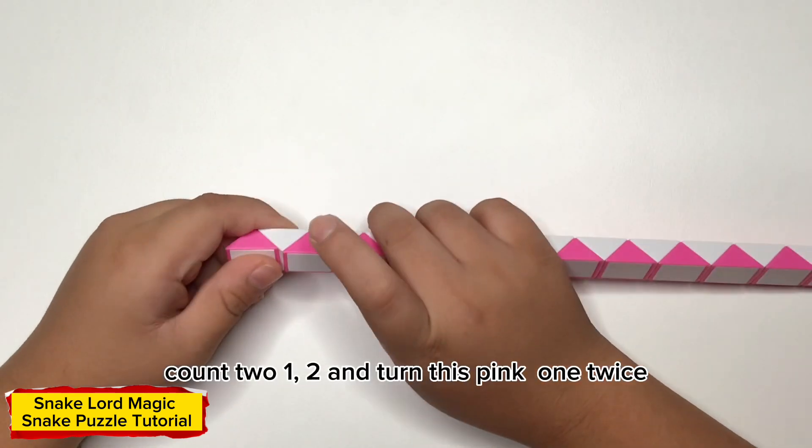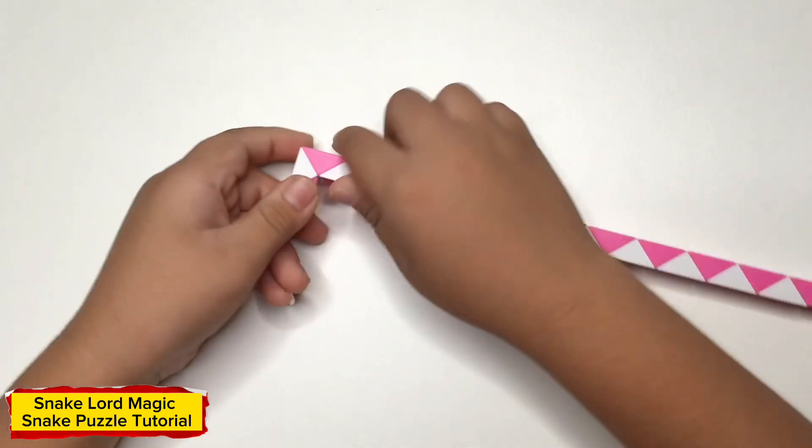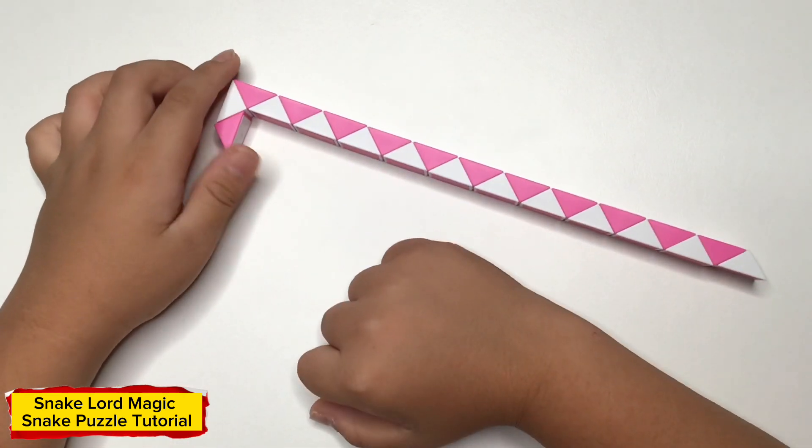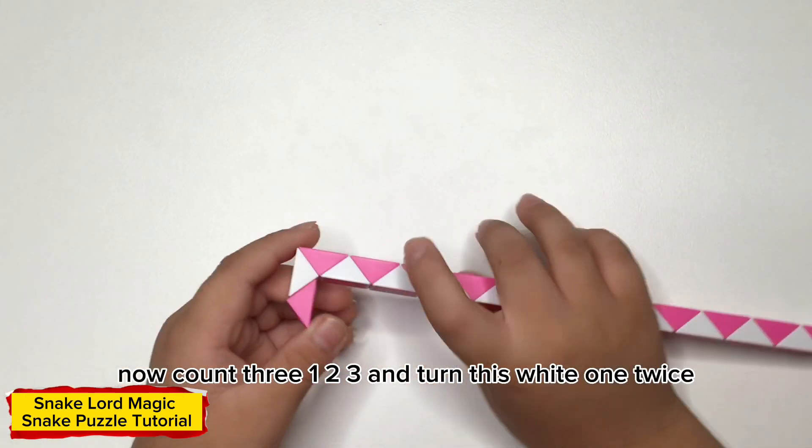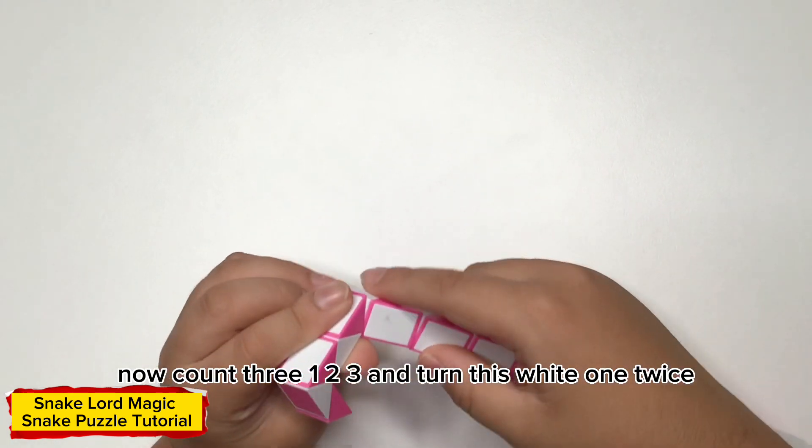Count 2, 1, 2, and then twist piece 1 twice. Now count 3, 1, 2, 3, and then twist piece 1 twice.